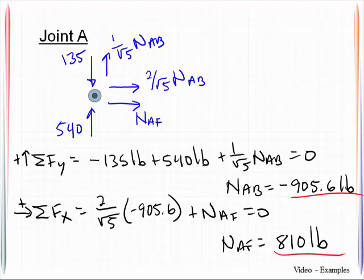It is the 905.6, or rather the horizontal component of that, plus NAF, and all that is equal to 0. So NAF equals 810 pounds, and that is positive. It is worthwhile to note at this stage that there was logic in the sequence of equilibrium equations I chose. I wanted to make sure, if at all possible, that I could write equilibrium equations that were a function of only one unknown.